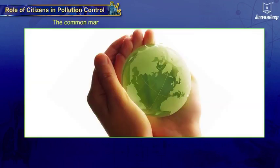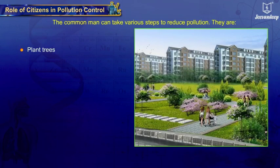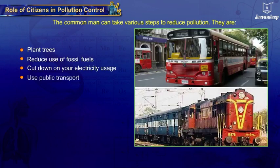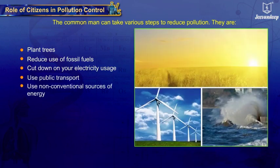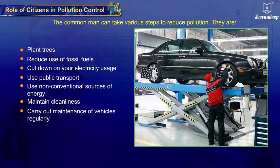Role of citizens in pollution control: The common man can take various steps to reduce pollution — plant trees and develop gardens, parks, and open grounds in your locality; reduce use of fossil fuels and cut down on electricity usage; use public transport; use non-conventional sources of energy such as solar, wind, and tidal energy; maintain cleanliness in your home and in public places; and carry out regular maintenance of vehicles.